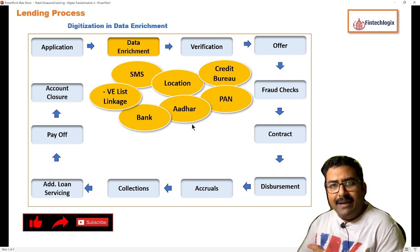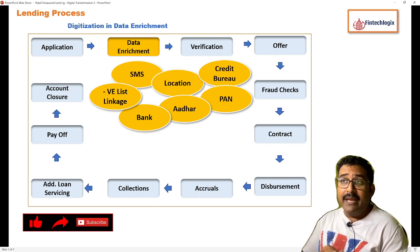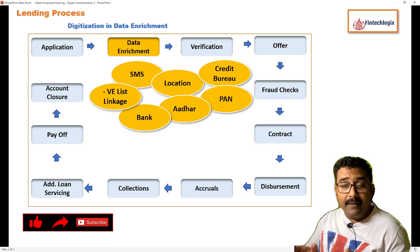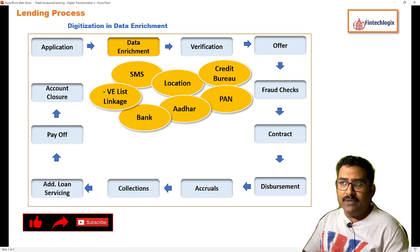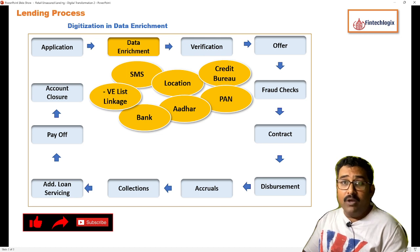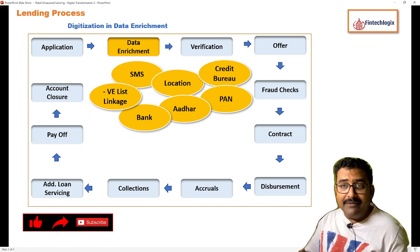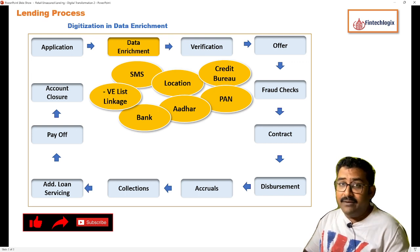The next one is about negative list linkage. If the customer appears in any blacklisted database, fraud history, cheater lists, or even has associations with AML (anti-money laundering) activities, those details can be enriched in real-time.